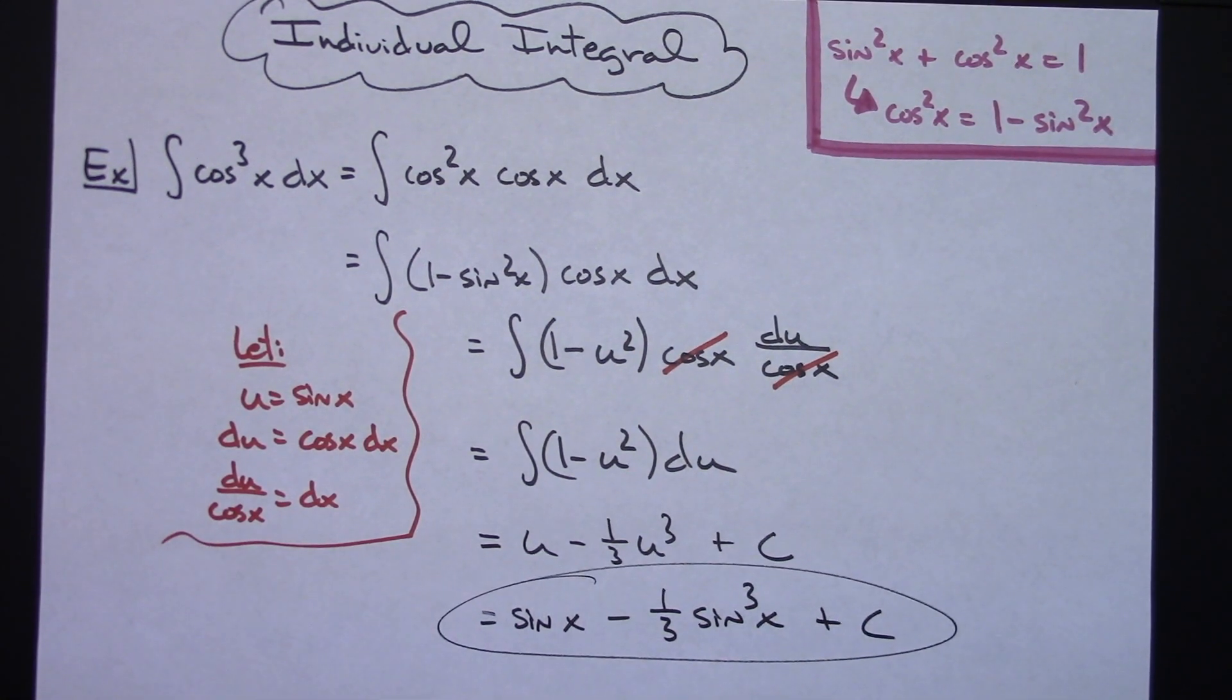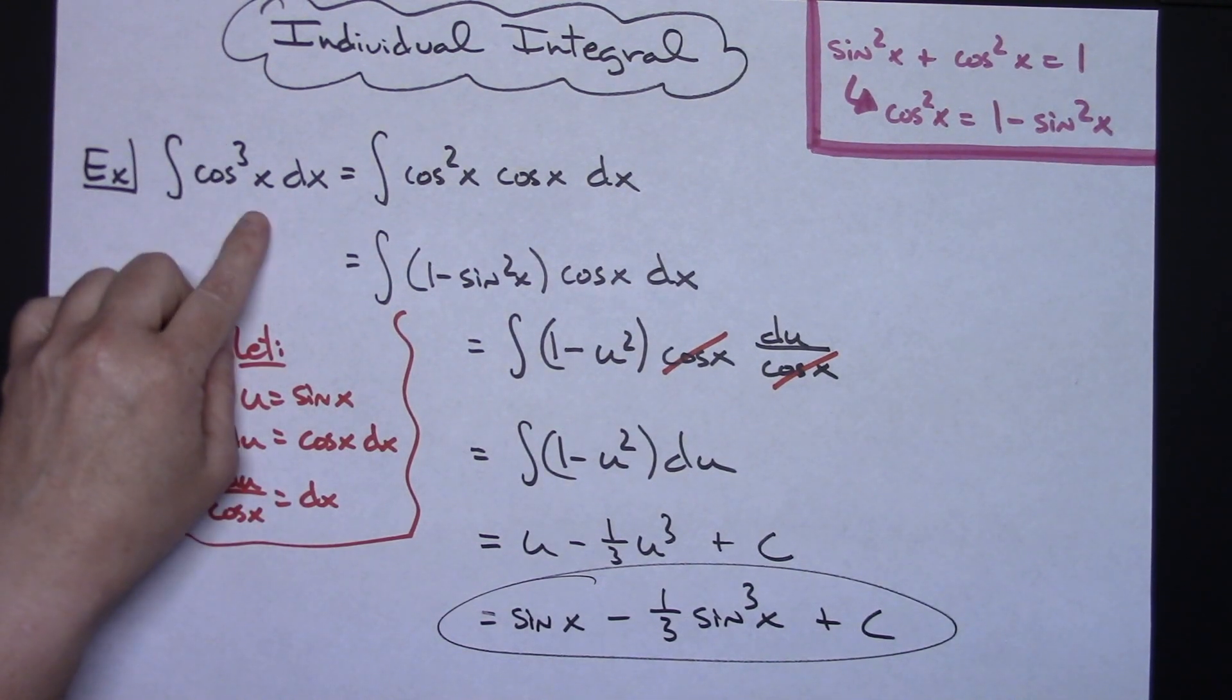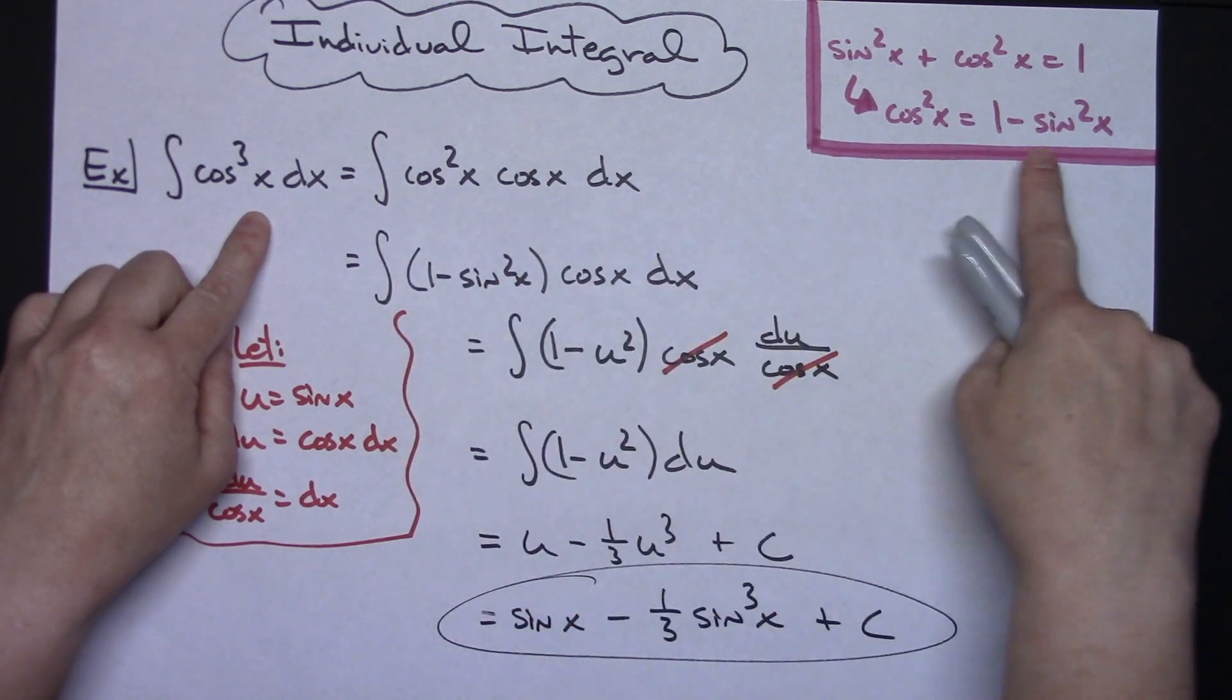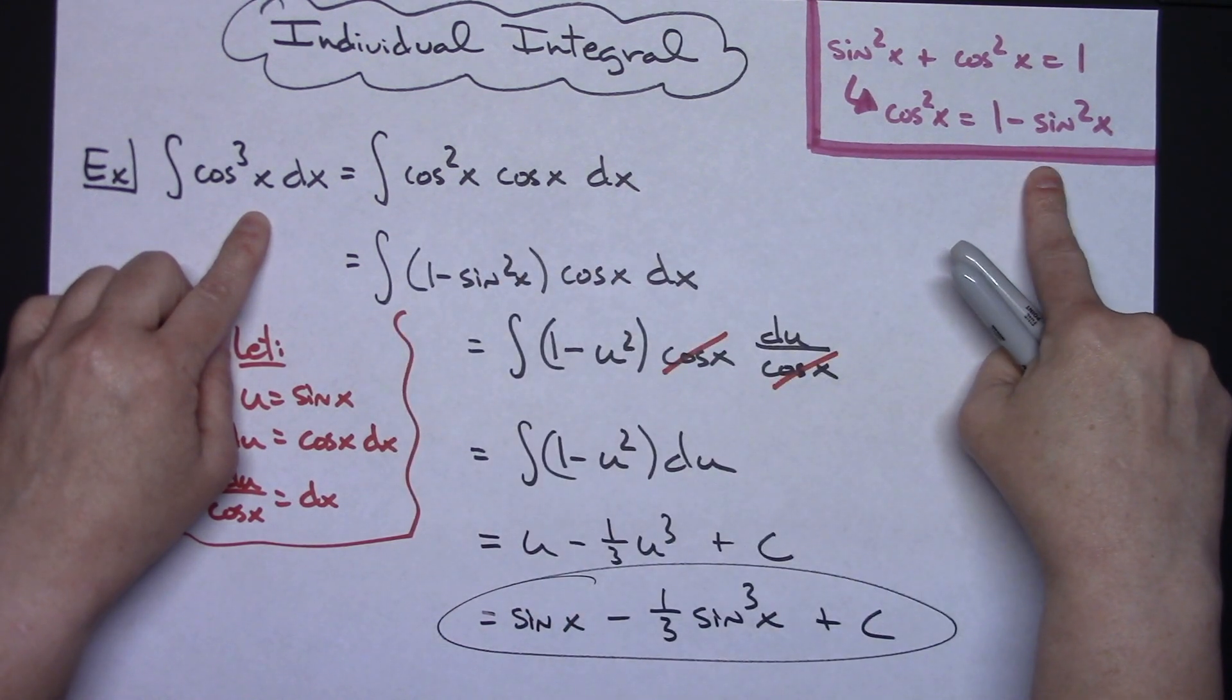So pretty much a straightforward u substitution integral there, after you first realize you've got to break this up and then use an identity for substitution.